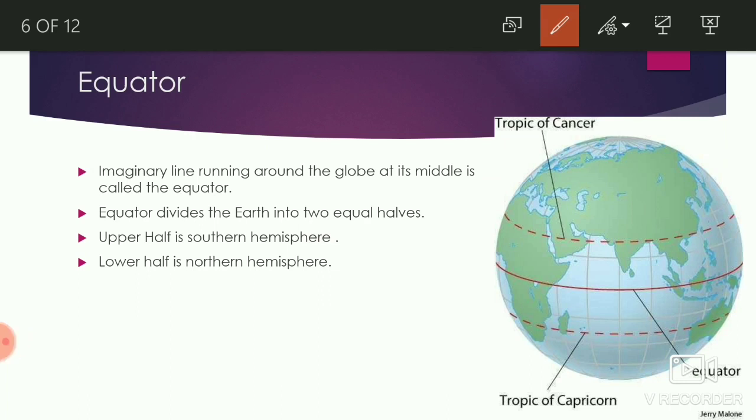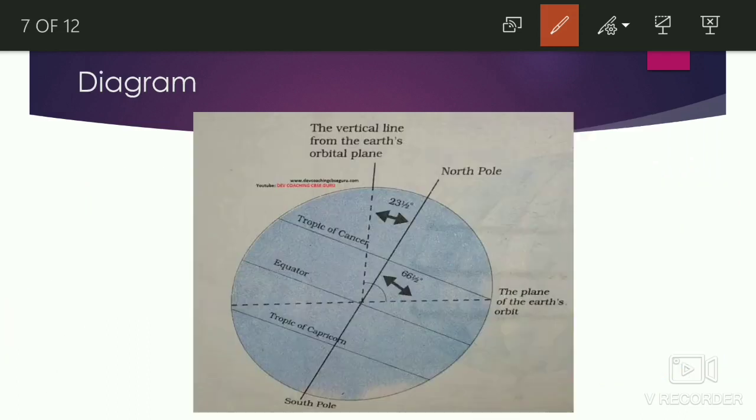Another imaginary line running around the globe at its middle is called the equator. The equator divides the Earth into two equal halves. The lower half is the southern hemisphere while the upper half is the northern hemisphere. We can better understand the reference points on the globe with the help of a diagram.